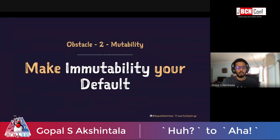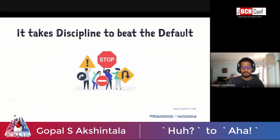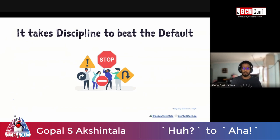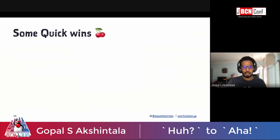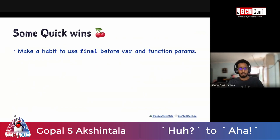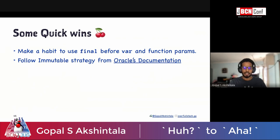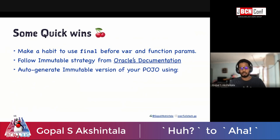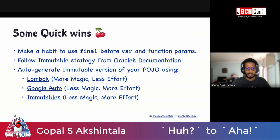Make immutability your default. Just like anything in life, you need discipline to beat defaults — like working out every day or following traffic rules to keep things in order. Some quick wins: make a habit of using final before variables and function params to guard your references, and follow an immutable strategy to make all your objects immutable. You can also depend on third-party libraries like Lombok, Google Auto, and Immutables, though it takes effort.